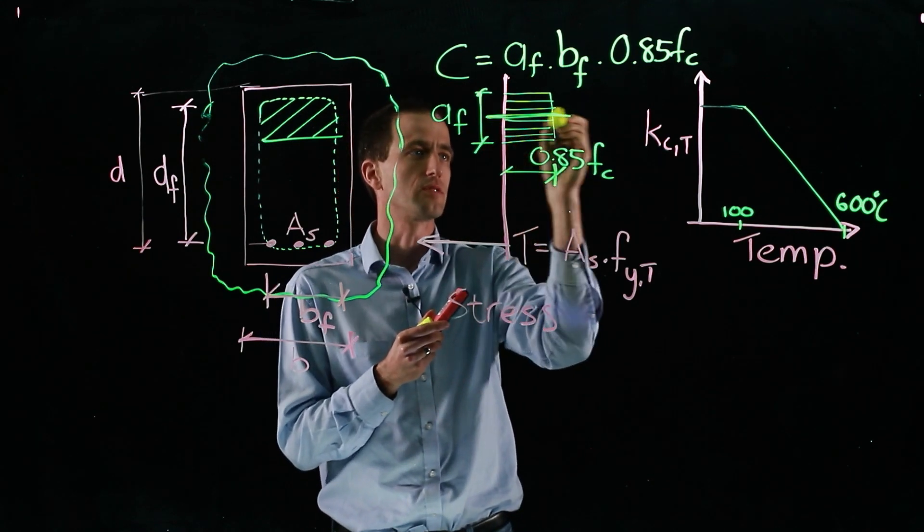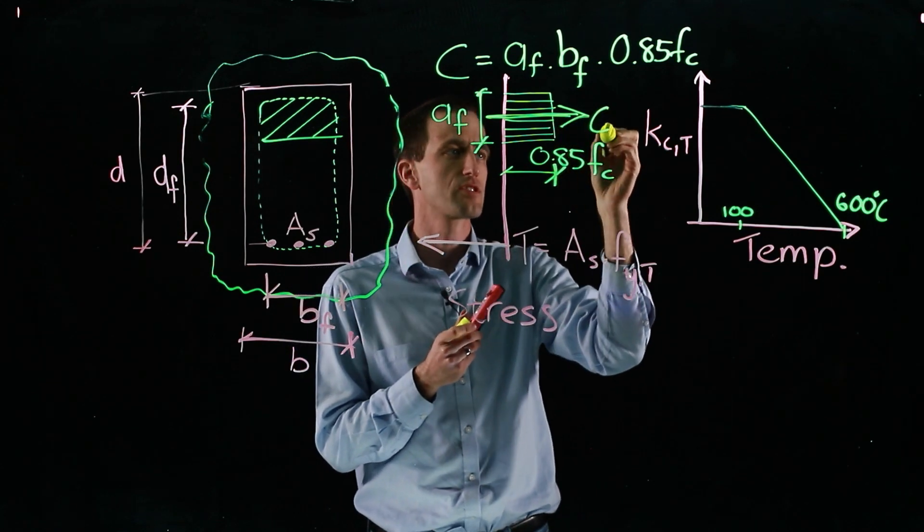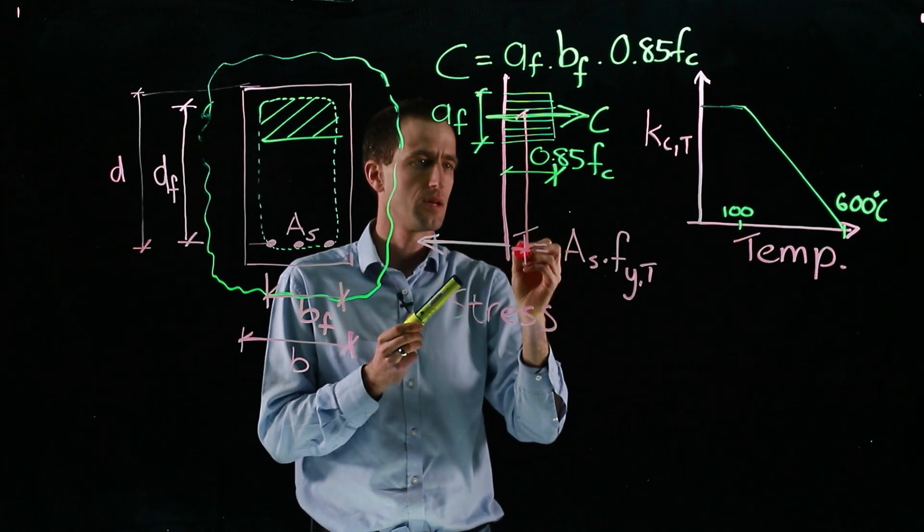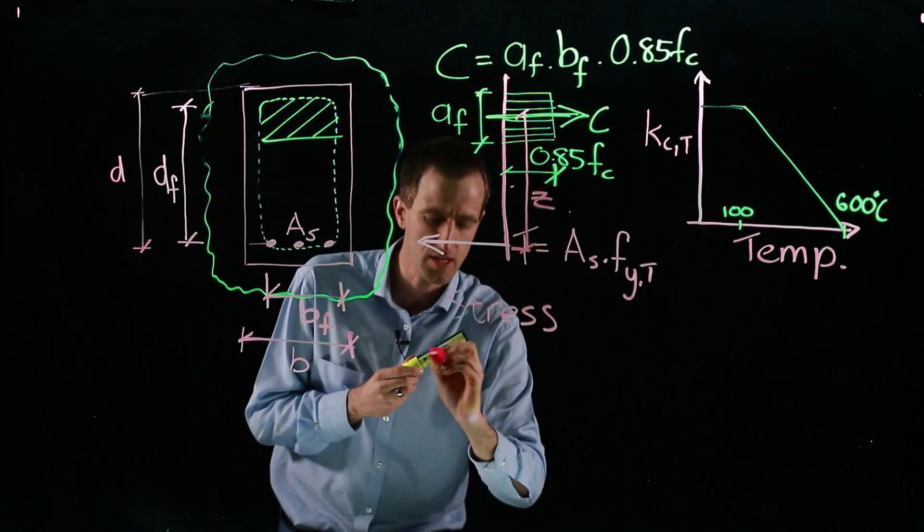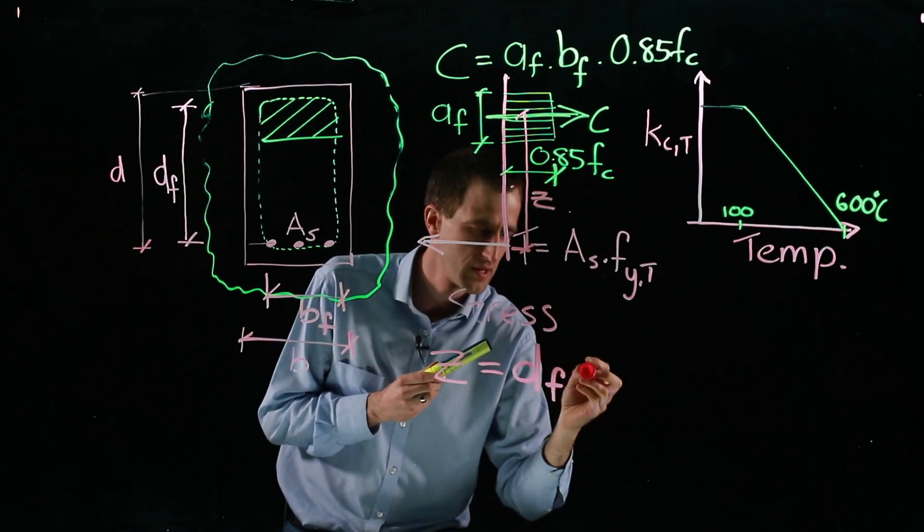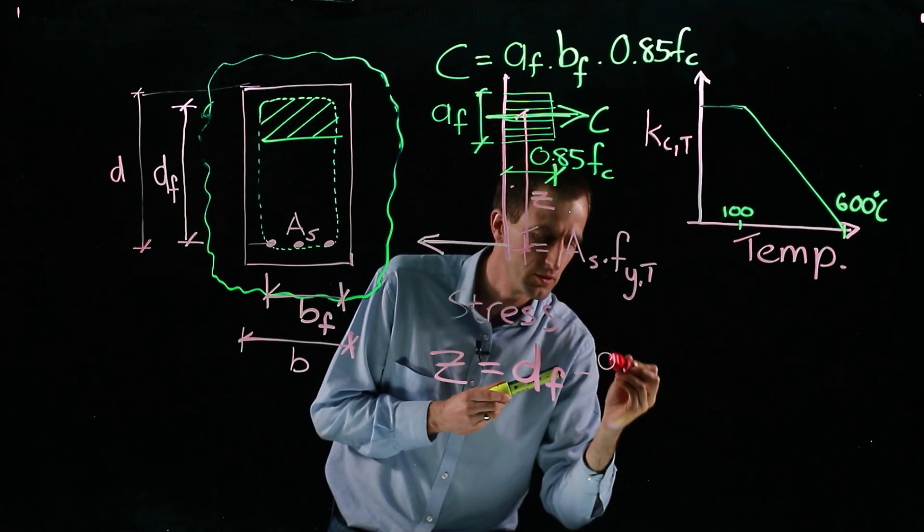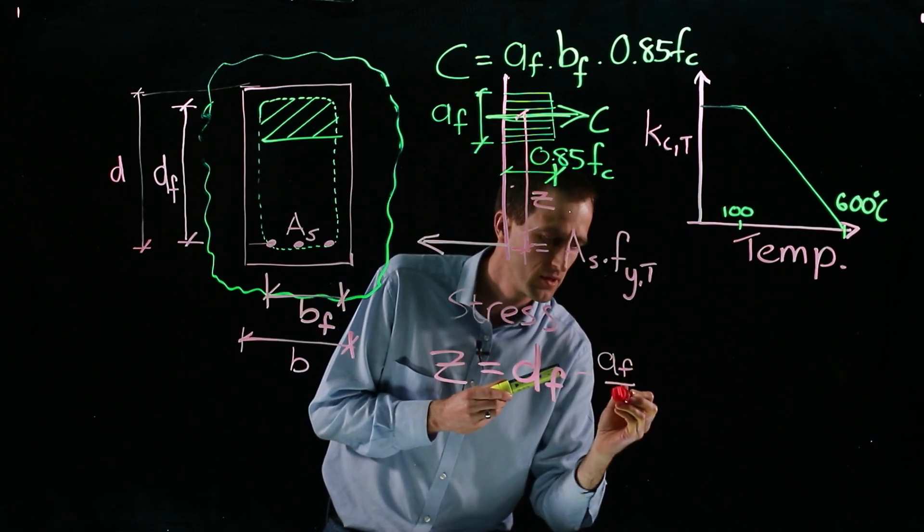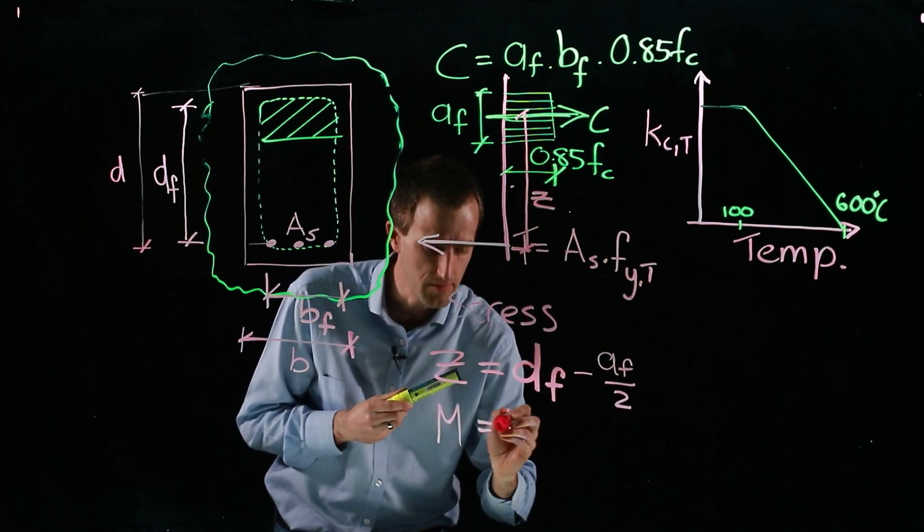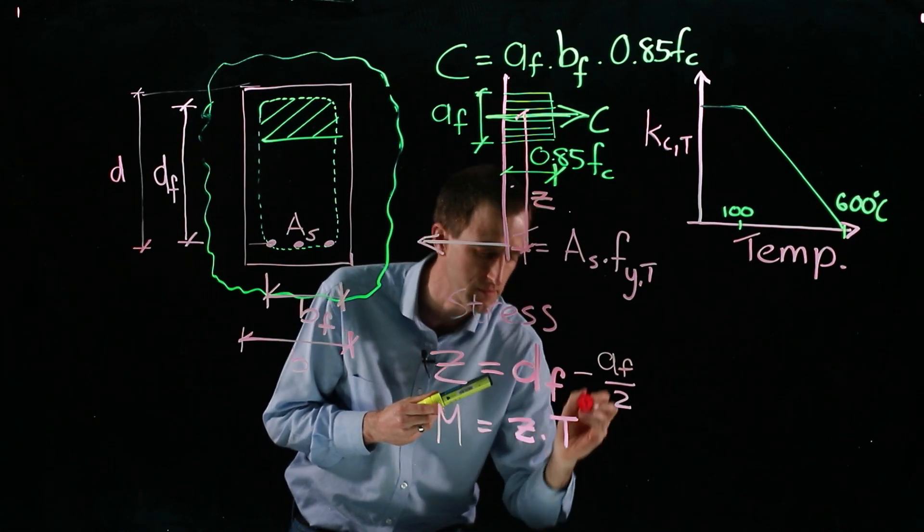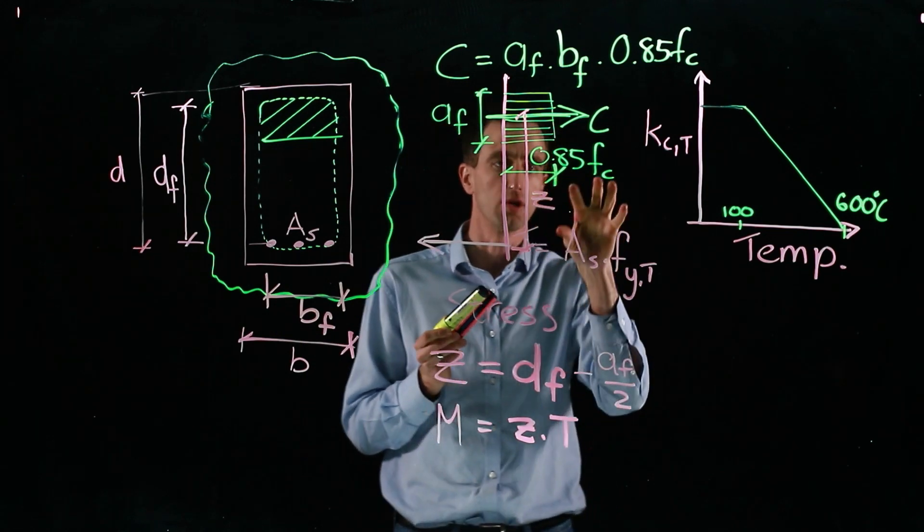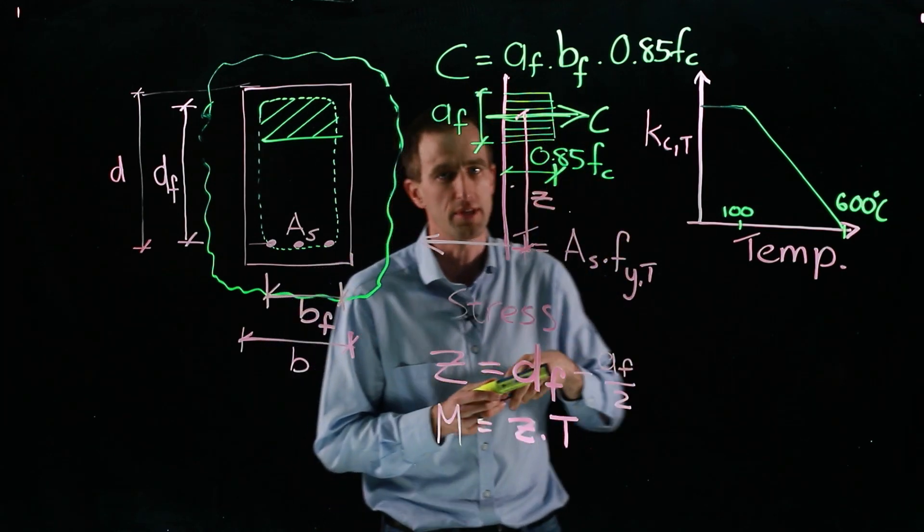Let me just put the resultant because we have some resultant here where C acts. We need the distance between them. We're going to call Z our lever arm. Our Z is simply the fire effective depth minus the depth of our compression block over 2. And our moment of resistance will simply be Z times T or Z times C. You can solve for AF, this is the easier one, and then calculate the rest of the factors.